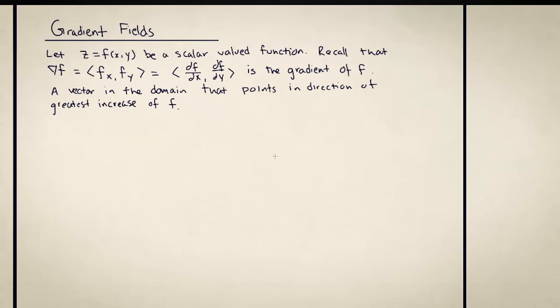Taking the gradient of a scalar-valued function is a really easy way to produce a vector-valued function. Recall that to calculate the gradient of a function, you take the partial derivatives and put it in each of the coordinates of a vector.